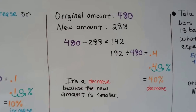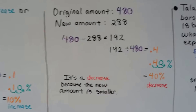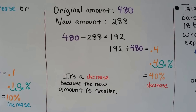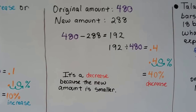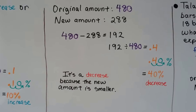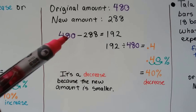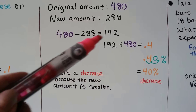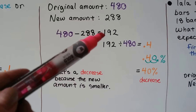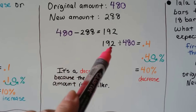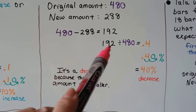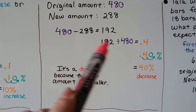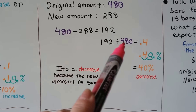The original amount is 480 and the new amount is 288. We find the difference: 480 minus 288. We can do that on a calculator and get 192. Then we take this 192, the difference, and divide it by the original amount, 480.